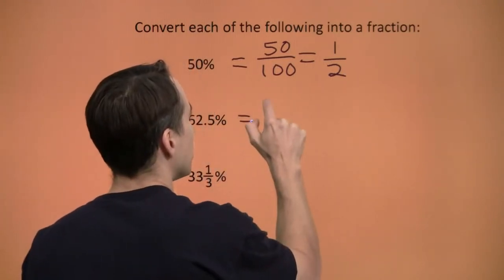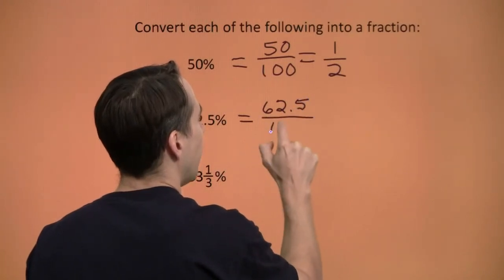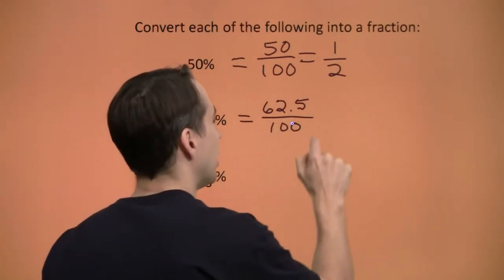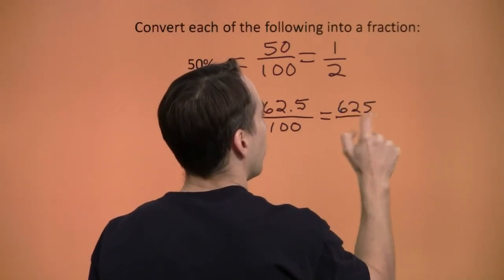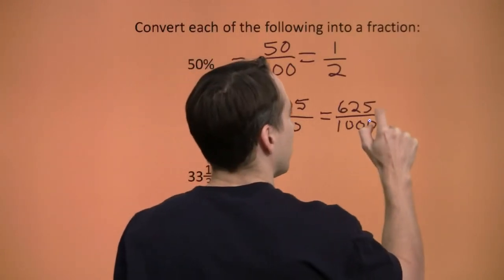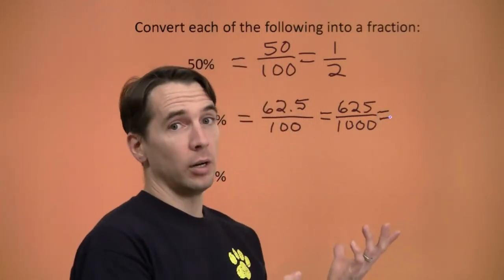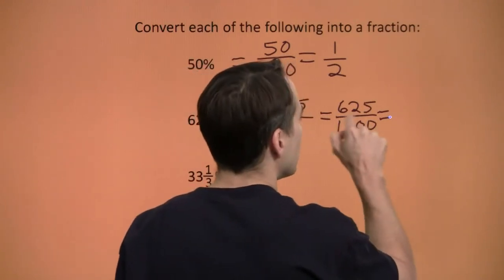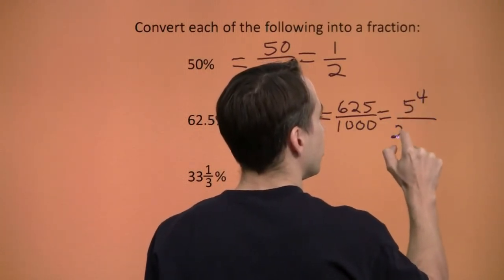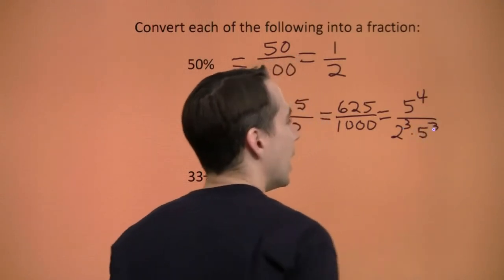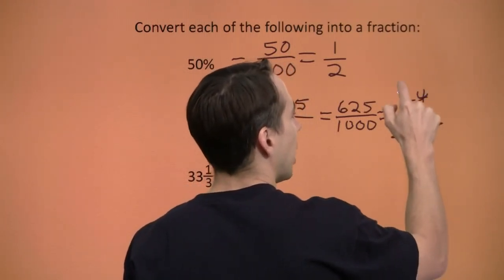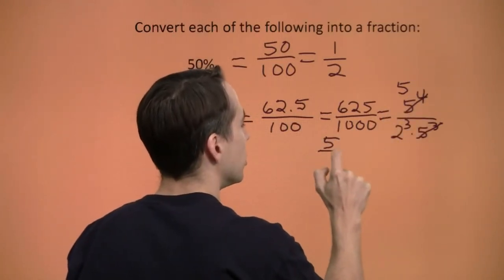62.5 percent — the percent just means per 100, so that's 62.5 over 100. To get rid of the decimal, multiply the top and bottom by 10, giving 625 over 1,000. Finding the prime factorizations: 625 is 5 to the 4th, and 1,000 is 2 cubed times 5 cubed. Taking out three factors of 5 from top and bottom, we're left with 5 over 2 cubed, which is 5 eighths.